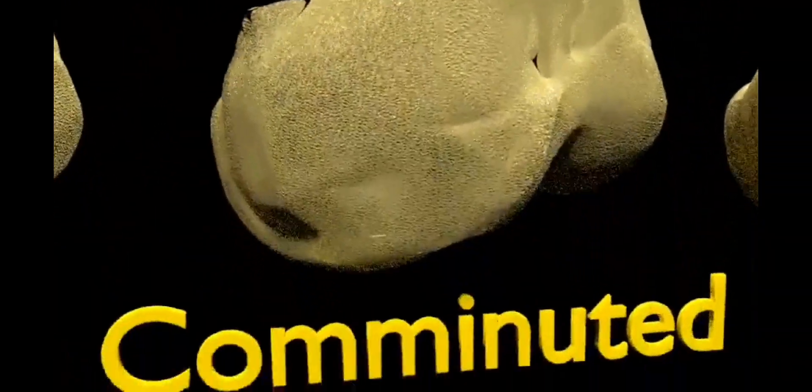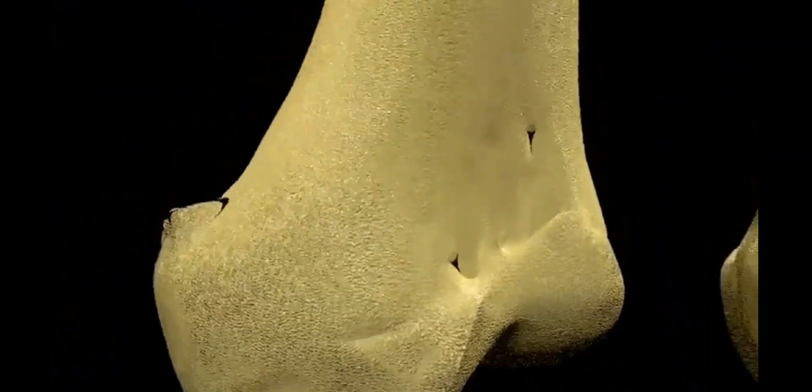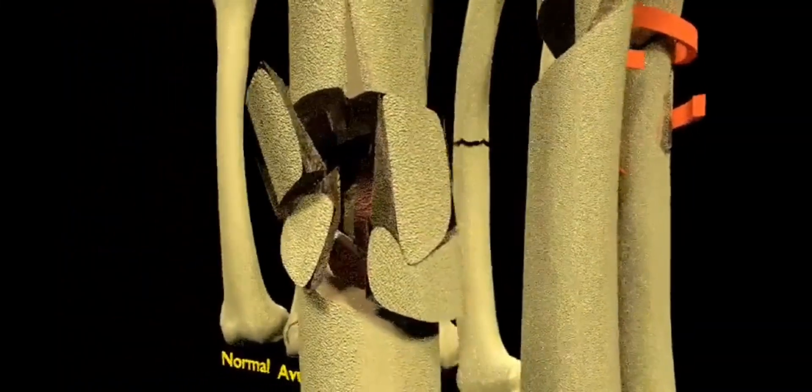Next, going on to the comminuted fracture. Comminuted fracture is characterized by the breaking of a bone into several small pieces and is the result of high-velocity injuries such as car accidents, falls from a high height, or high-energy injuries with tissue loss such as a gunshot injury.